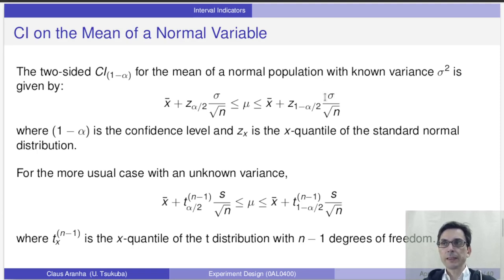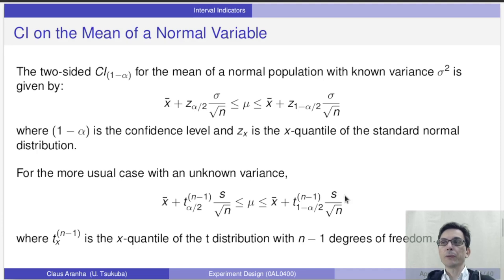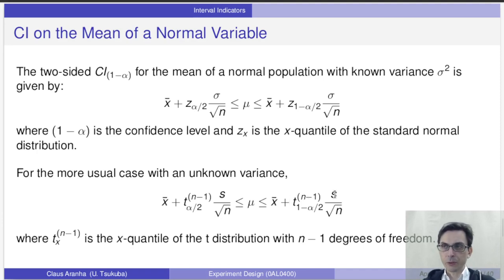In this formula, sigma is the true standard deviation that we assume we know — but what happens if we don't know the true standard deviation? In that case we can use a second formula. This formula is almost the same as the first one but has two key differences. First, instead of sigma we use s, which is the sample standard deviation — an estimate for the true standard deviation. Second, we use t instead of z, indicating that we use the Student's t-distribution instead of the normal distribution. We will talk more about the Student's t-distribution in a future class, but it can also be easily calculated using a Python or R library.